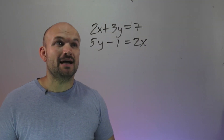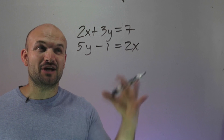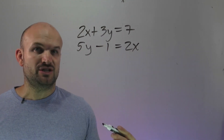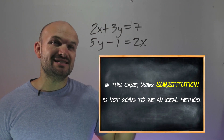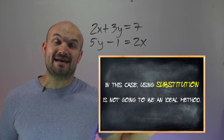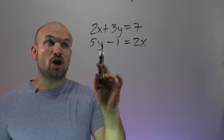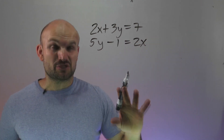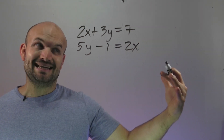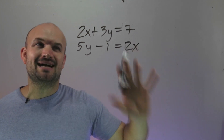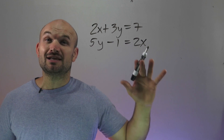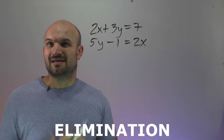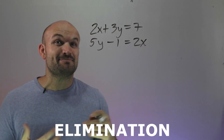Looking at example number 3, you can see there's a 1 here, but that's not a coefficient of any variable. If you look at each variable, none of them have a coefficient of 1 or negative 1. So in this case, using substitution is not an ideal method. We could isolate one of the variables and plug it into the other expression, but that would bring some fractions and some messy work. So we're going to look into our other method, which is elimination. But to really understand how to use elimination for this problem, we want to look at tip number 3.